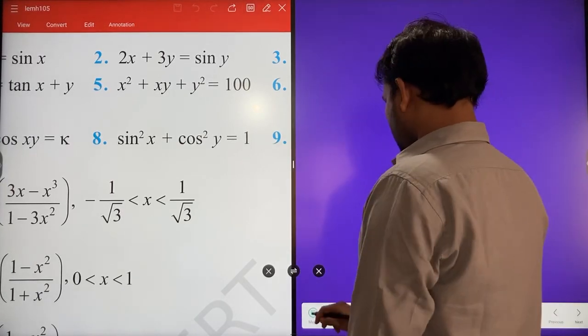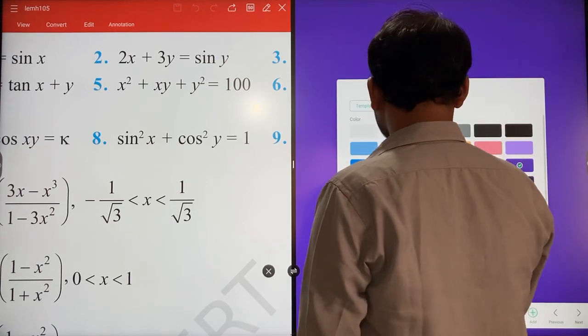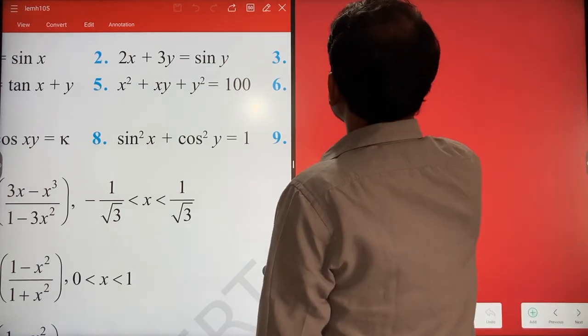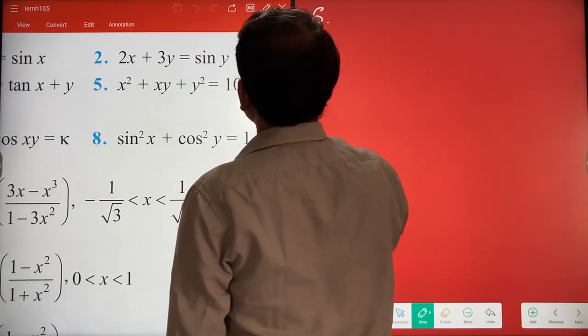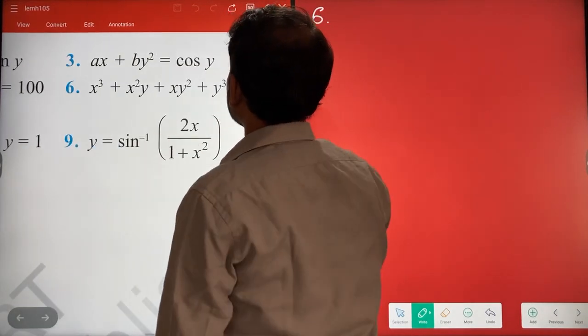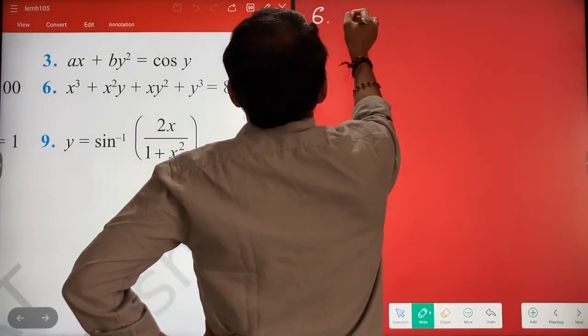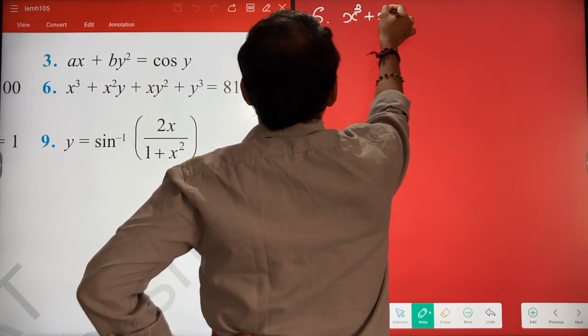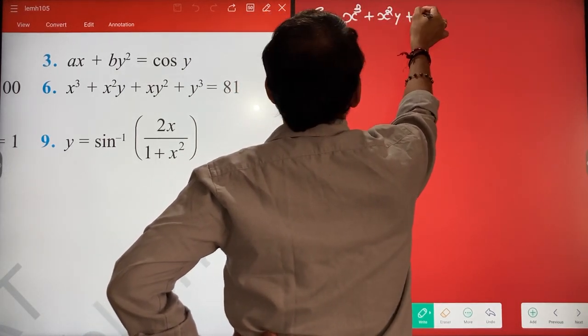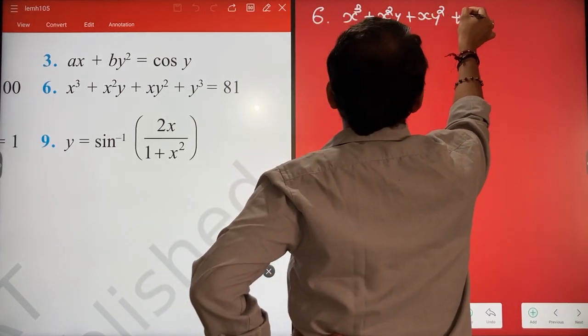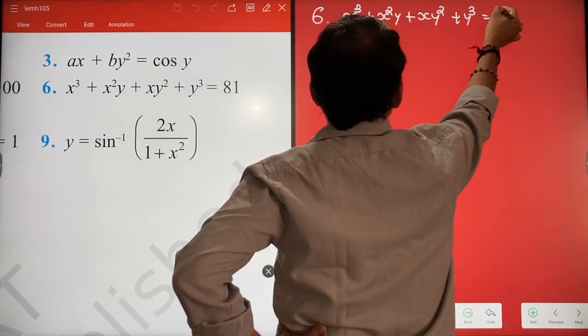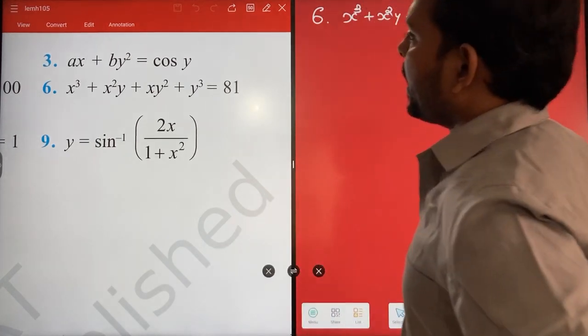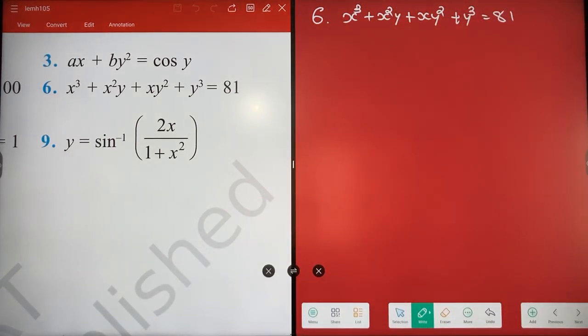Okay, sixth numerical. X cube plus X square Y plus XY square plus Y cube equals 81. X³ + X²Y + XY² + Y³ = 81. Done?